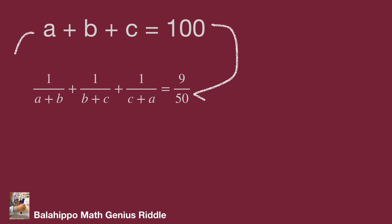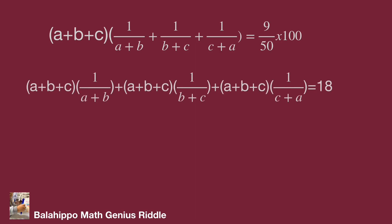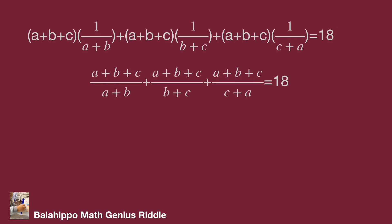So I multiply these two equations and adjust the sequence. There are three items in the new equation: item 1 is (a plus b plus c) times 1 over (a plus b), item 2 is (a plus b plus c) times 1 over (b plus c), and item 3 is (a plus b plus c) times 1 over (c plus a), all equal to 18. This reduces to (a plus b plus c) over (a plus b) plus (a plus b plus c) over (b plus c) plus (a plus b plus c) over (c plus a) equal to 18.